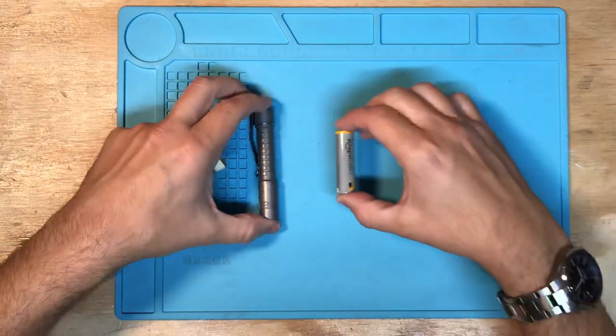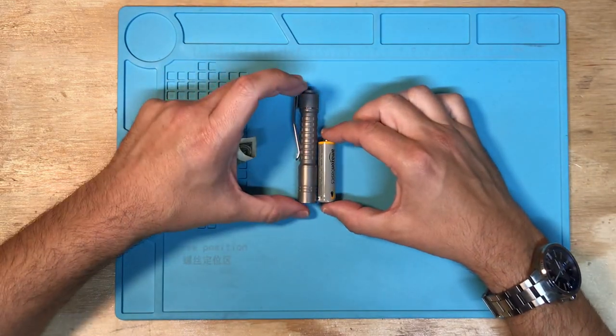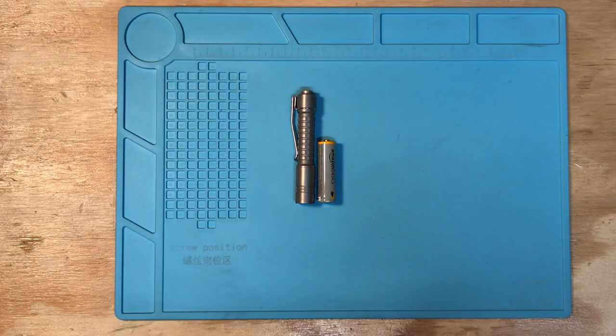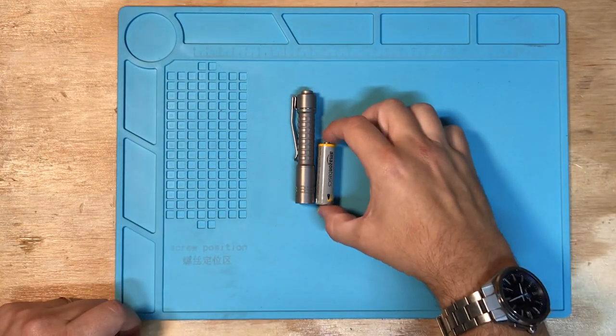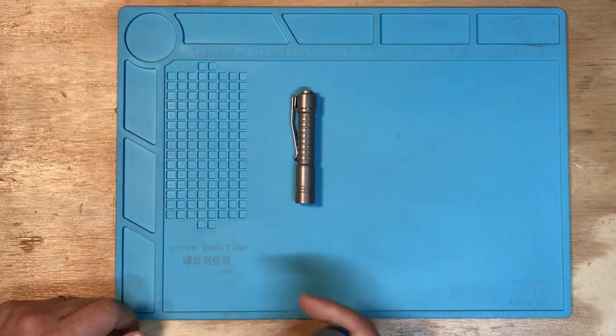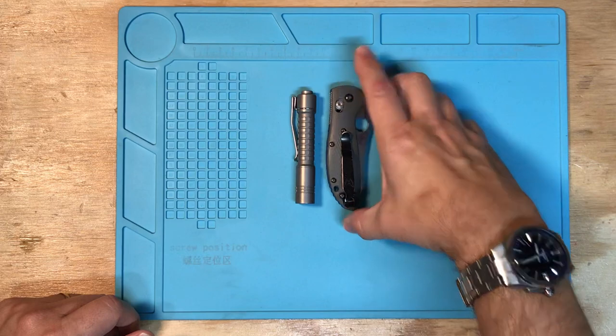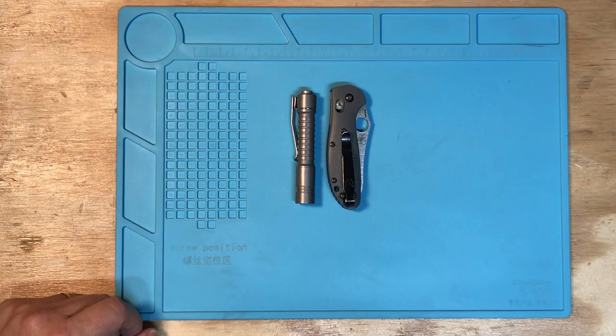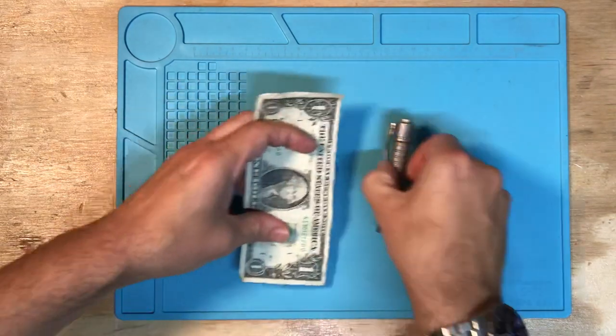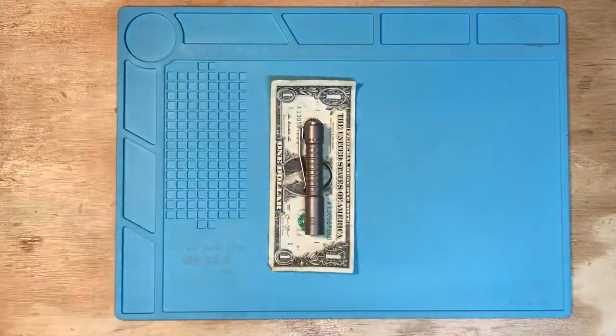So here's the flashlight compared to a AA battery. As you can see the flashlight is a little bit taller than a AA battery. It's almost not quite two AA batteries. Here's the flashlight next to the Benchmade Mini Grip and here is the flashlight on top of an American dollar bill.